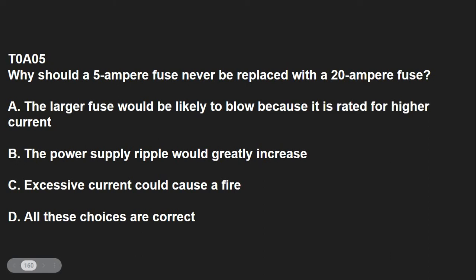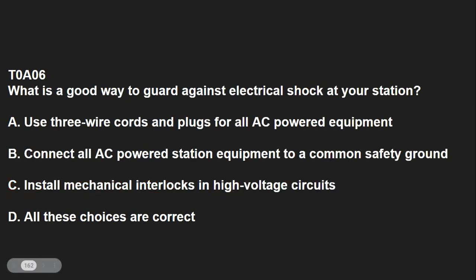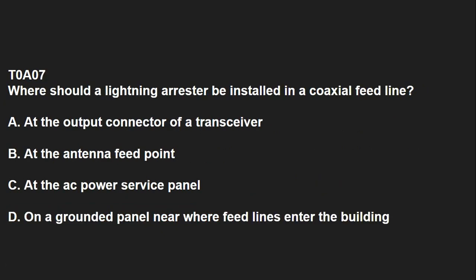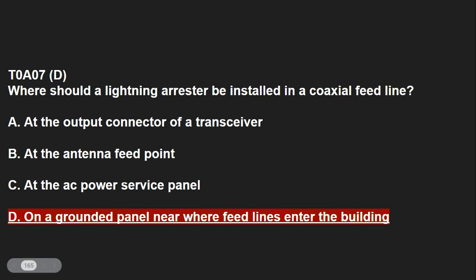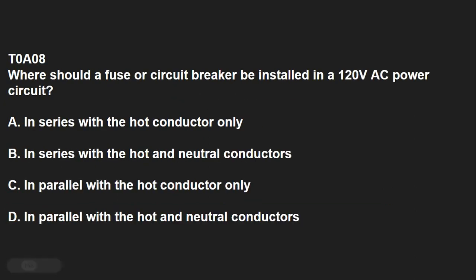T0A05: Why should a 5-ampere fuse never be replaced with a 20-ampere fuse? Excessive current could cause a fire. T0A06: What is a good way to guard against electrical shock at your station? All of the choices are correct: use three-wire cords and plugs on all AC-powered equipment, connect all AC-powered station equipment to a common safety ground, and install mechanical interlocks in high-voltage circuits. T0A07: Where should a lightning arrestor be installed in a coaxial feed line? On a grounded panel near where the feed line enters the building. T0A08: Where should a fuse or circuit breaker be installed in a 120-volt AC power circuit? In series with the hot conductor only.